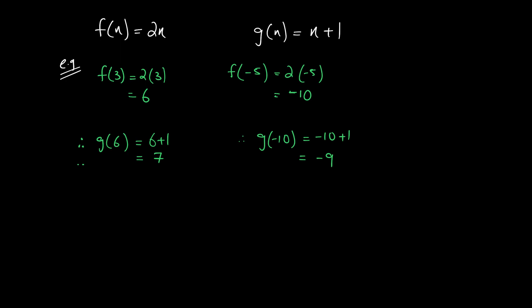Let's say you have f(x) = 2x and g(x) = x + 1. When I find f(3), at x = 3, the output is 6. Now when that same output of f is inserted into function g, it gives another output: 7. Similarly, if I insert -5 into function f, I get -10 as my output.